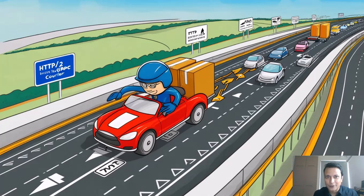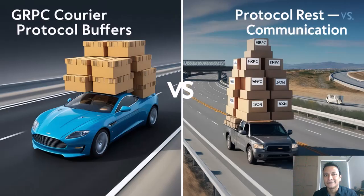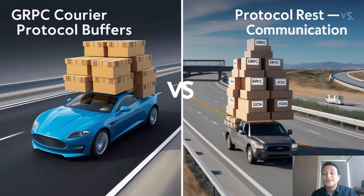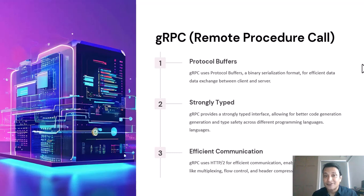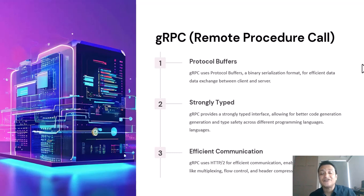gRPC is the preferred choice for tech companies that need fast, reliable communication across different systems, whether they are in the same city or across the globe. Technically, gRPC is an open-source RPC — Remote Procedure Call — framework that uses HTTP/2 for transport, enabling efficient communication with features like multiplexing and flow control. It relies on Protocol Buffers for serializing structured data, which significantly reduces message size and speeds up communication. gRPC provides strongly typed interfaces, making it easy for developers to generate client and server code in various languages. It's ideal for microservice architectures where performance and scalability are crucial.